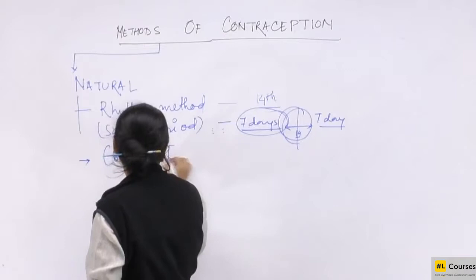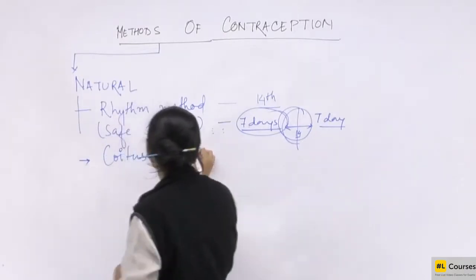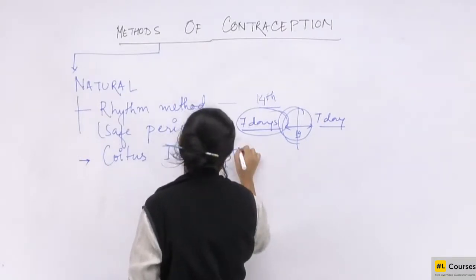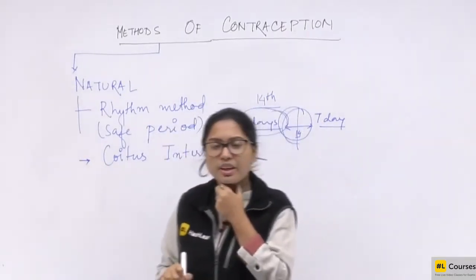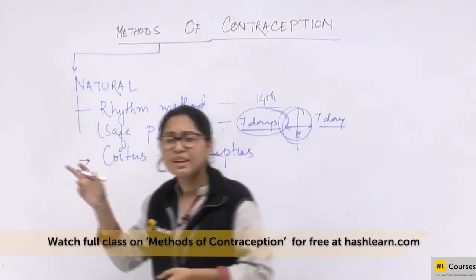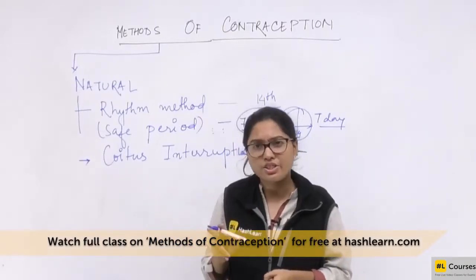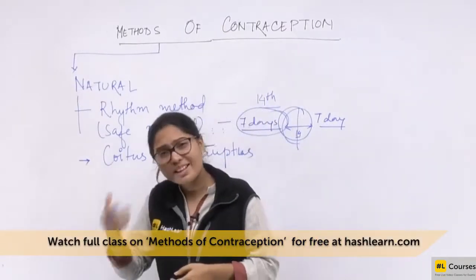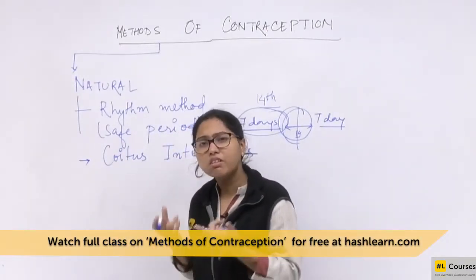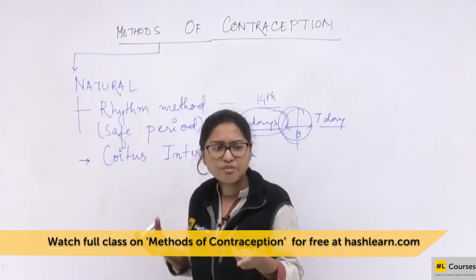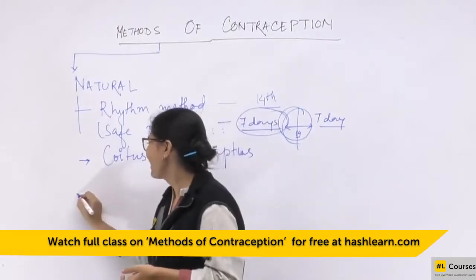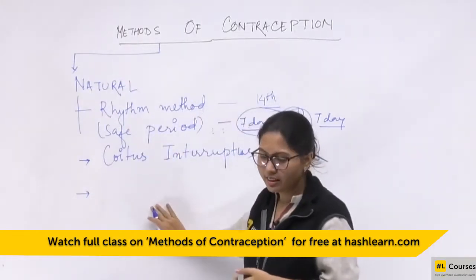The next method is coitus interruptus. During intercourse, the male removes the penis just before ejaculation. This is one of the oldest methods adopted by human beings. If no semen is deposited in the vagina, there is no possibility of fertilization.